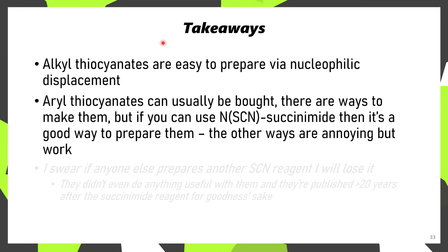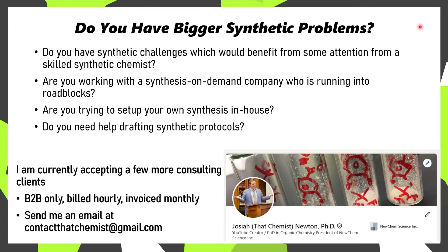So the takeaway from all of this chemistry is that alkyl thiocyanates are easy to prepare via nucleophilic displacement. Aryl thiocyanates can usually be bought, and there are ways to make them — if you can use that Dean Tost chemistry with N-thiocyanosuccinimide, that's probably your best bet. There are other ways to make them, but they're a little bit steppy and frustrating. Do you have bigger synthetic problems or synthetic challenges that would benefit from attention from a skilled synthetic chemist? Maybe you're working with a CRO or a synthesis-on-demand company running into roadblocks, or maybe you're trying to set up your own synthesis in-house. I'm still accepting a few more consulting clients for 2025 — if you'd like to get in touch, my email is listed below.